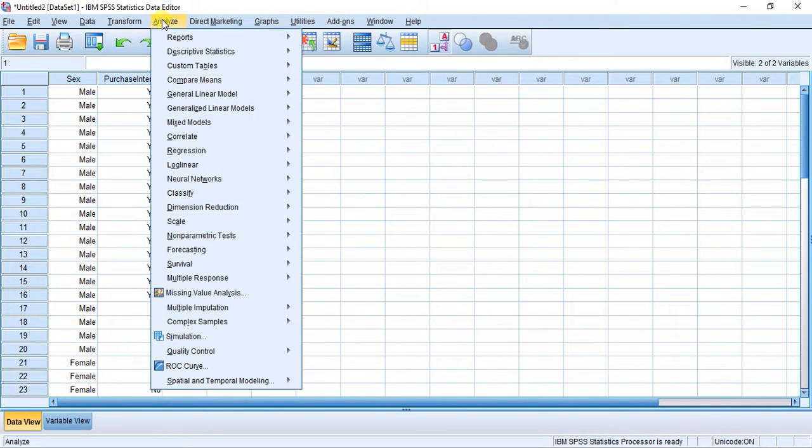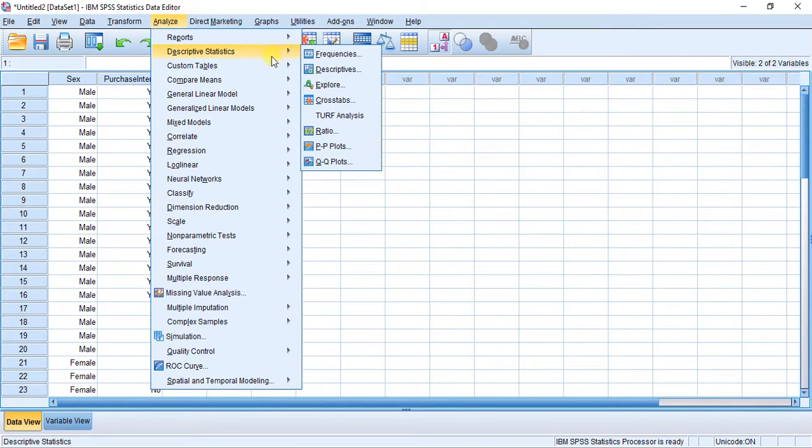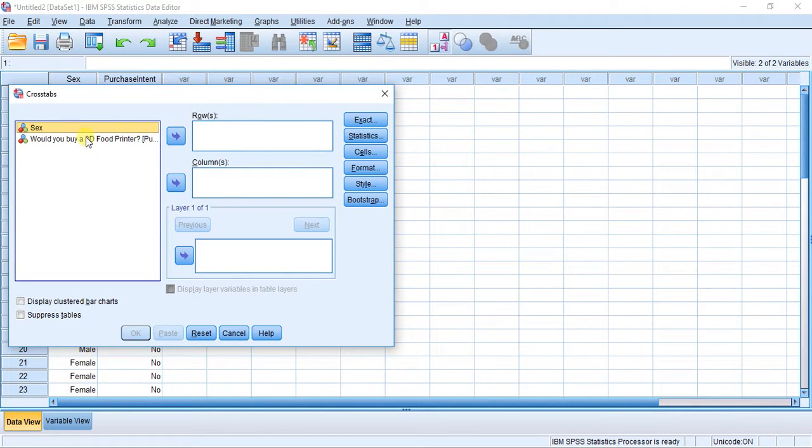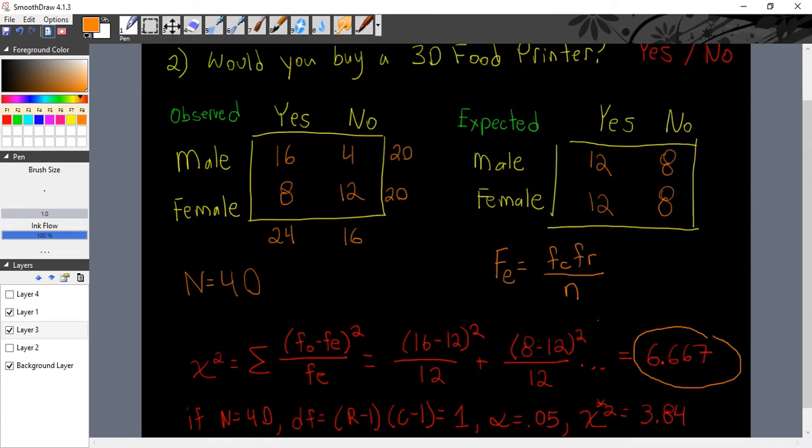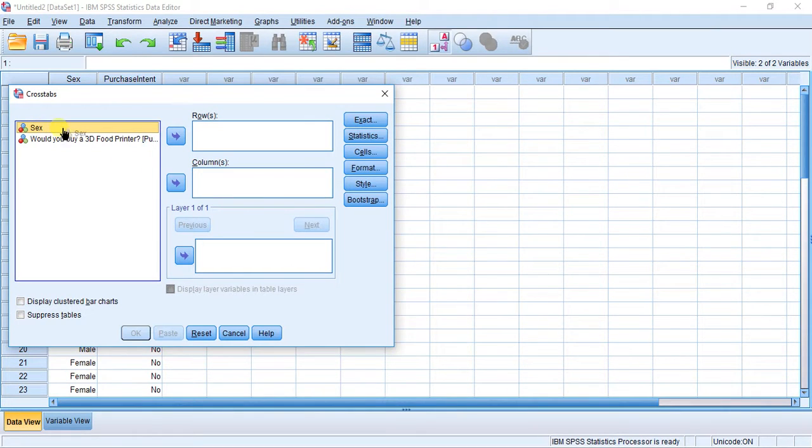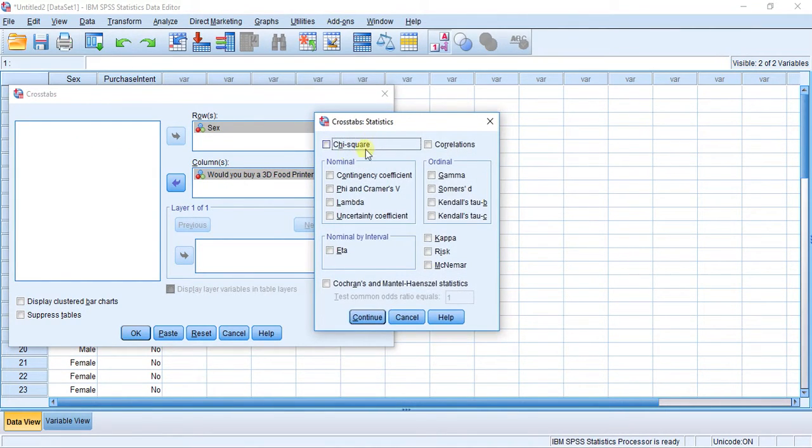So this is so simple. I'm just going to analyze descriptive statistics and then cross tabs. Analyze descriptive and cross tabs. And you have rows and you have columns. So if I were to just copy how we had it here, we have our purchase intent in the columns and we have our gender in the rows. So let's just do that sex. Let's put that in the rows and purchase intent and put that in the columns.